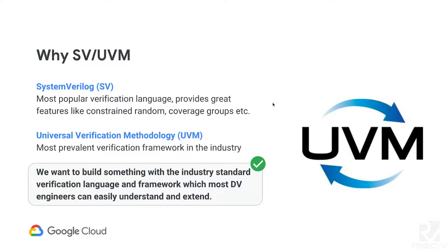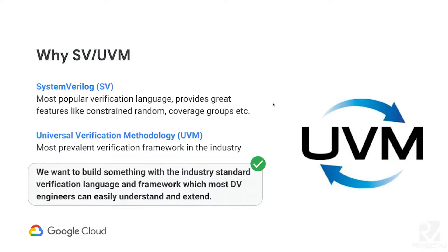Before I jump into the details of our flow, I want to give some background on SystemVerilog and UVM. SystemVerilog is the dominant language in the verification world — it provides awesome language features like constraint randomization and coverage models, making it much easier to write such an instruction generator. UVM is the most prevailing verification infrastructure built on top of SystemVerilog. We want to do something that DV engineers can understand very easily and make enhancements on top of.